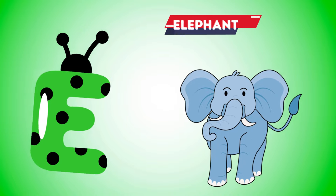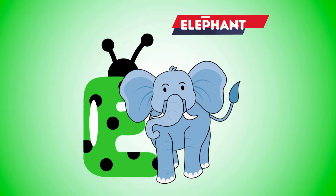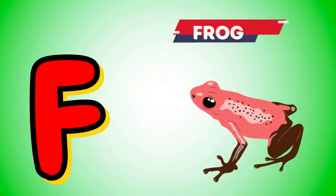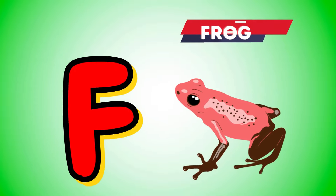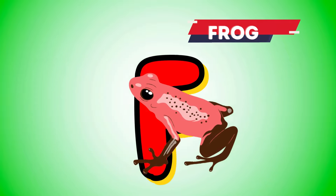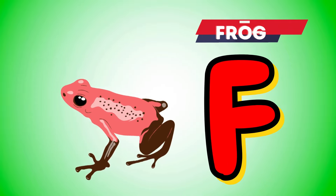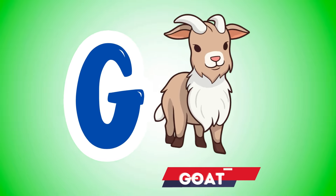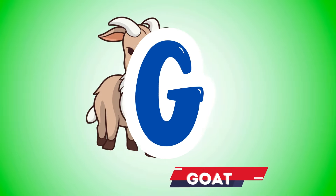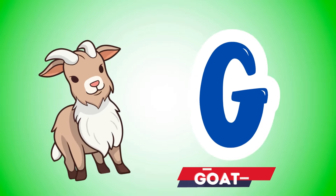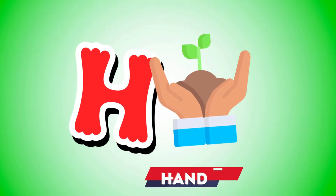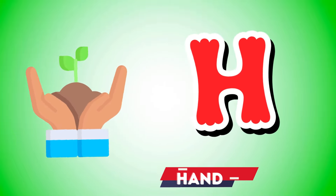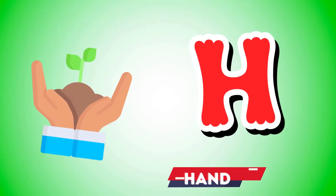E is for elephant, e-e-elephant. F is for frog, f-f-frog. G is for goat, g-g-goat. H is for hand, h-h-hand.